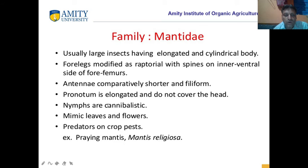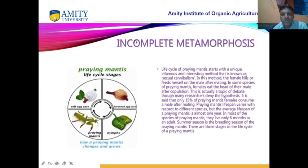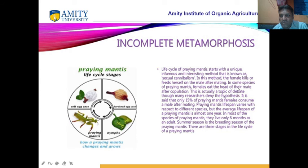The females are cannibalistic. What is the meaning of cannibalistic? Cannibalistic is the property of the female — female copulates with the male, and after copulation, the male is killed and the female eats the head of the male. This is very surprising. That property is called cannibalistic. Ootheca — the egg-laying structure is called ootheca; they lay many eggs. They have incomplete metamorphosis — no pupa stage. Egg, then nymph, and then adult — pupa is absent, so they have an incomplete life cycle.